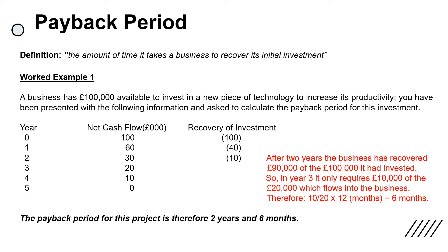An example in front of you shows you how to calculate it. I always recommend to students to put in a third column for recovery of investment, so you have a running total of how much is left at the end of each year to recover from the initial investment. In this example, at the end of year two there's only £10,000 remaining, and in year three there are £20,000 net cash inflows. So it's 10 over 20 times 12 to work out the number of months — which gives you six months.